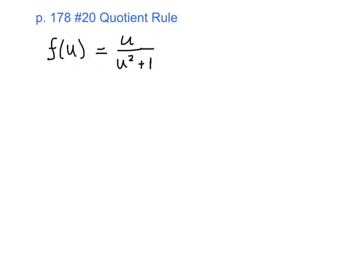So, let's go ahead and take one more look at the quotient rule here. I'm specifically working on page 178, number 20. And as you can see, this function is f of u equals u over the quantity u squared plus 1.